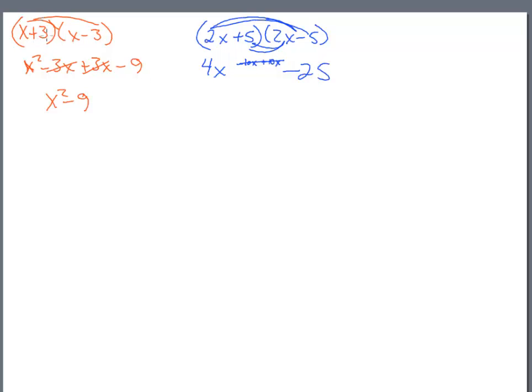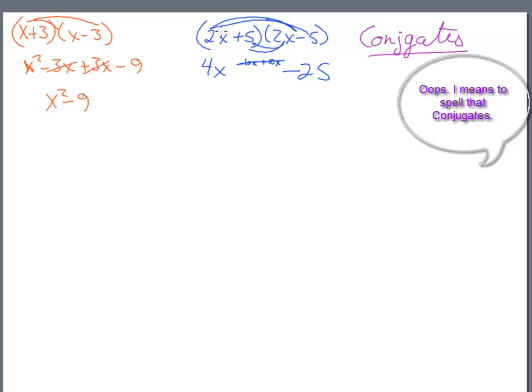These guys are not exact opposites of each other. You'll notice the 2x's are the same sign, but the second part is a different sign. These guys have a special name called conjugates. So conjugates are when you have a binomial and one of the signs is different.